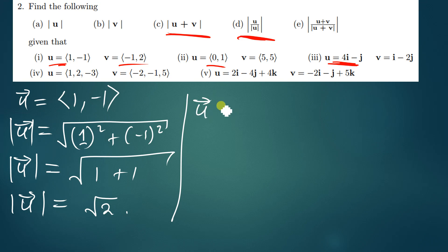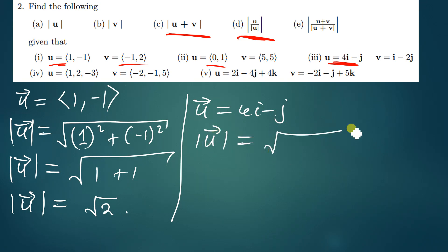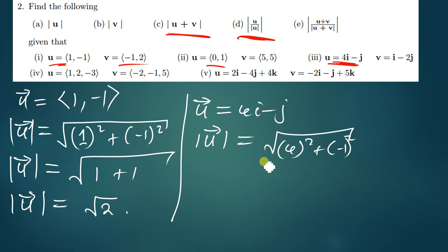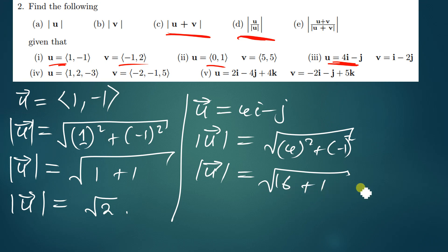We have U = 4i − j. So the magnitude of this vector U will therefore be equal to the square root of 4 squared plus (−1) squared — the coefficient of j is negative 1. This gives us the square root of 16 plus 1, so the magnitude of vector U gives us the square root of 17.